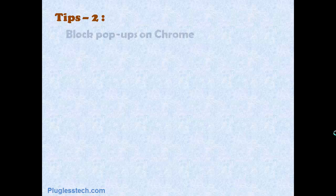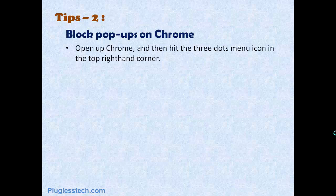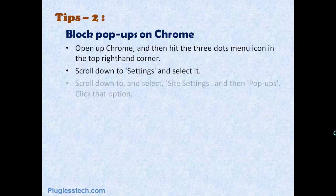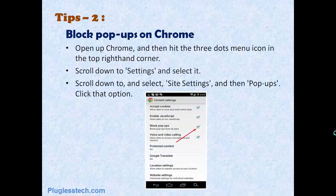Tip 2: Block pop-ups on Chrome. Open up Chrome and then hit the three dots menu icon in the top right-hand corner. Scroll down to Settings and select it. Scroll down to and select Site Settings, then Pop-ups, and click that option.